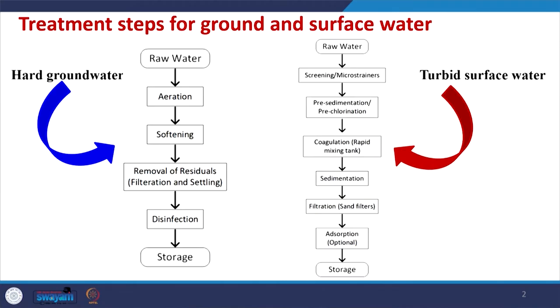Similarly, water may be taken from a lake or reservoir. Depending upon the requirement, the water treatment strategies may be different. There may also be a possibility that we want to treat water being discharged from municipal bodies or from industrial units, and their treatment strategy will also be different. Here we are trying to learn about the treatment steps for ground water and surface water.